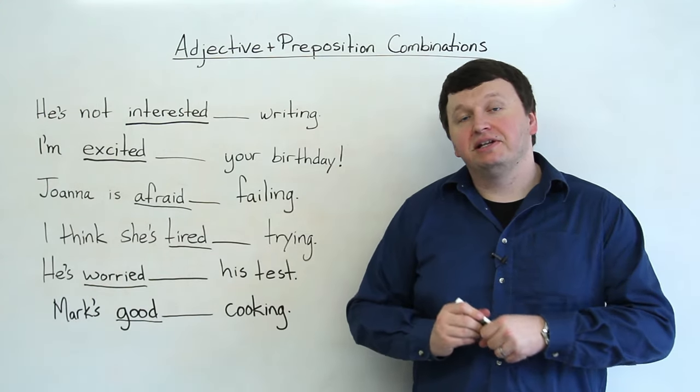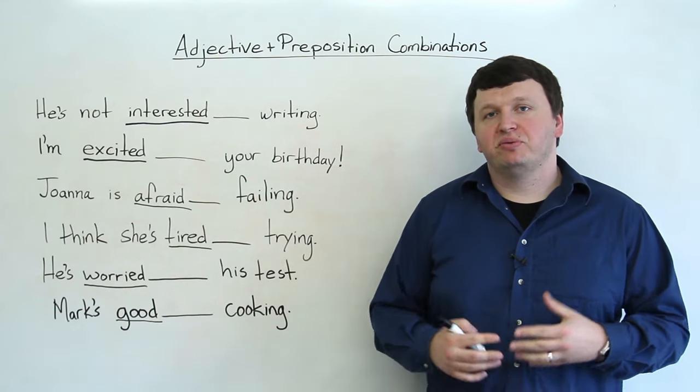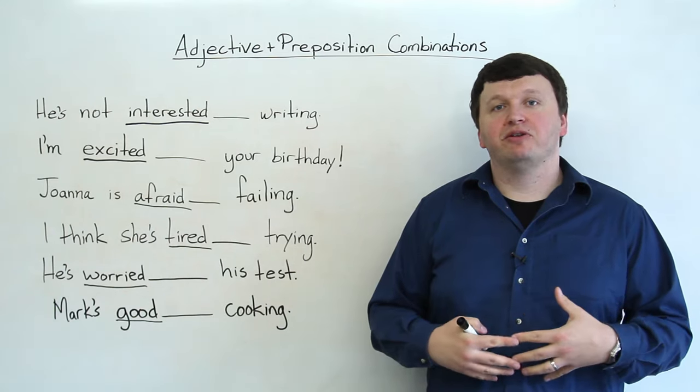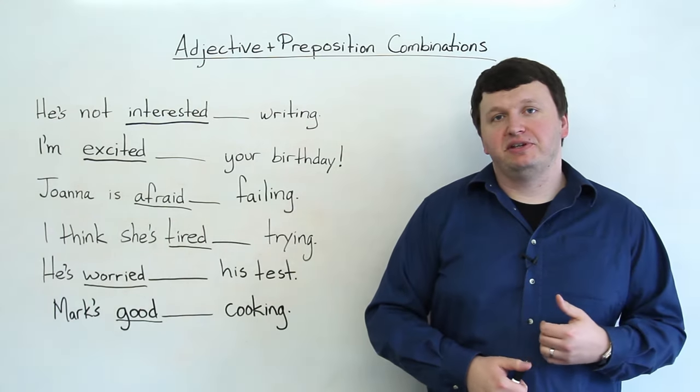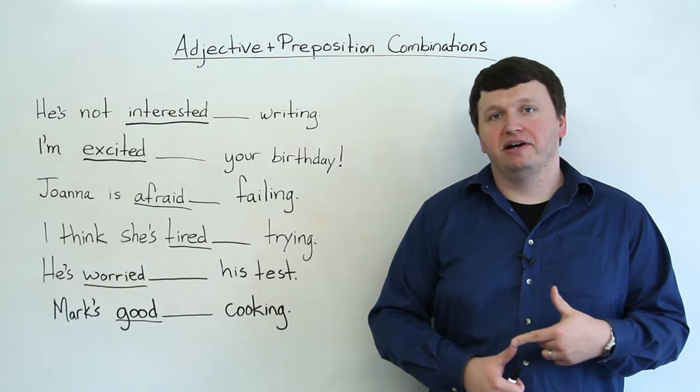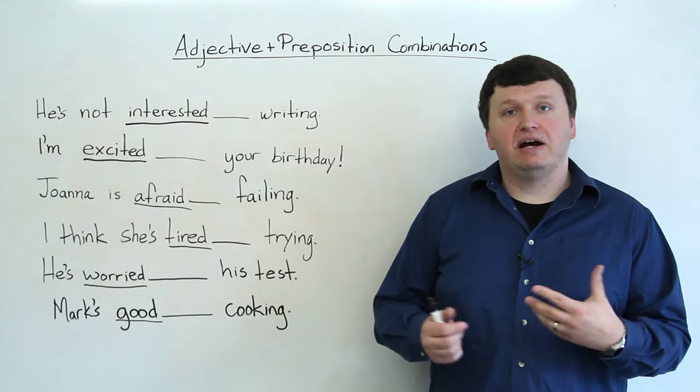Now, in English, we often have adjectives combined with prepositions to create an expression or a small phrase. And we can follow these prepositions with either a gerund, which is an -ing noun or verb acting like a noun, or just a noun in general.